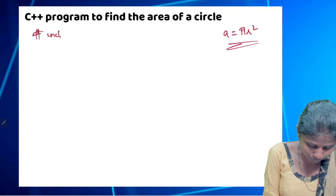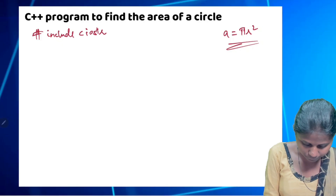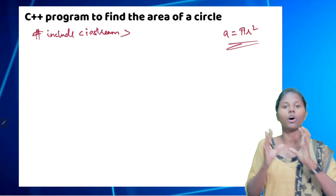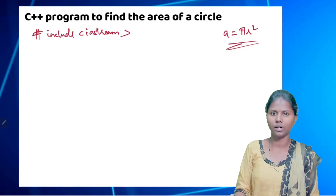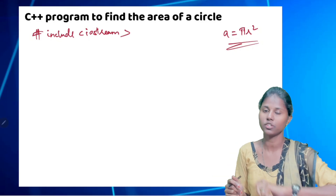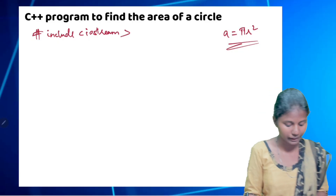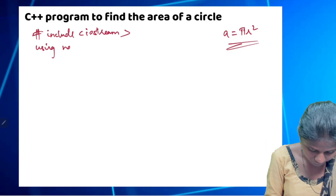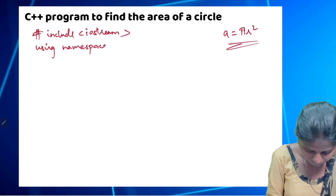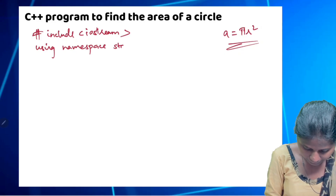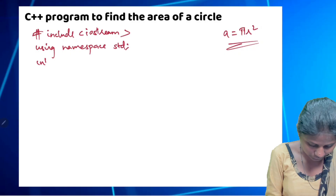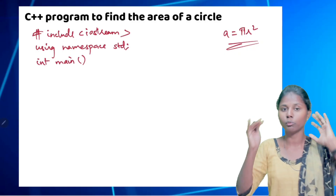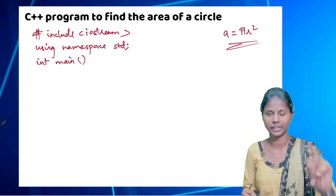First, we write hash include iostream. Then using namespace std semicolon and int main. These three lines are constant in all programs.